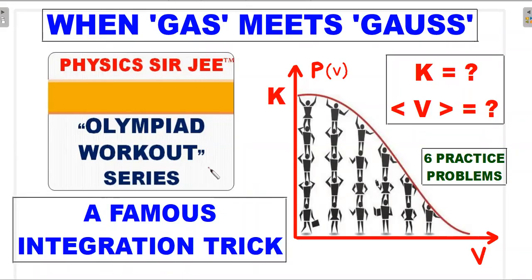Welcome back to the channel Physics Sergi. Here we are in the Olympiad Workout Series. We've brought forward a question wherein we'll be taking up an ideal gas but with a hypothetical Gaussian distribution. I've already shared the title of this video in a community post and requested students to make a wild guess on what the problem situation could be. I'm very impressed with some of those imaginative and creative physical situations you provided, and I'll definitely take those up in future videos.